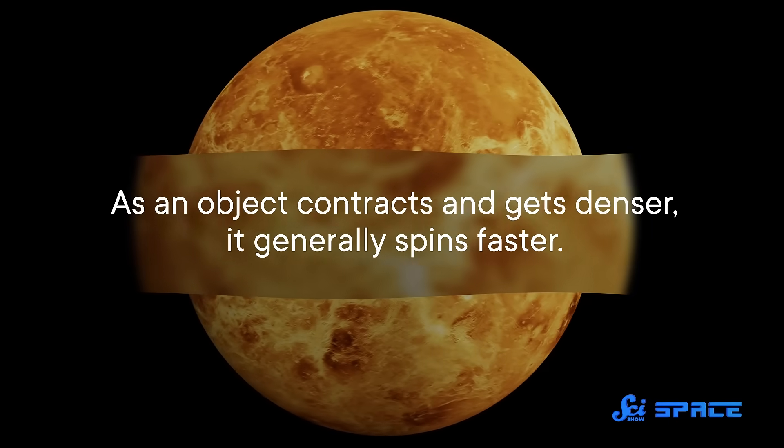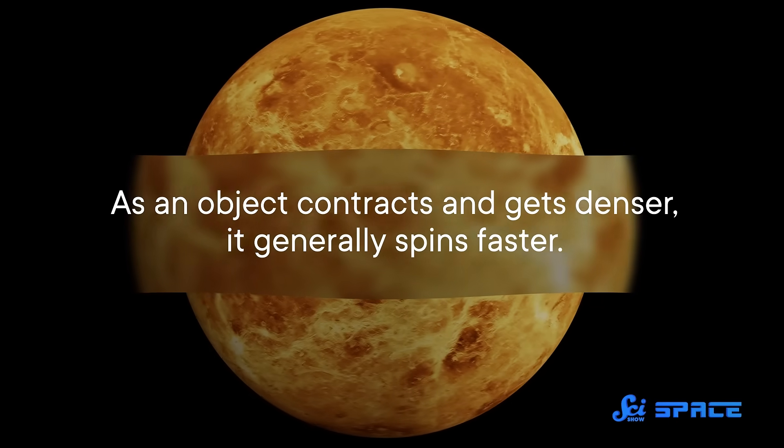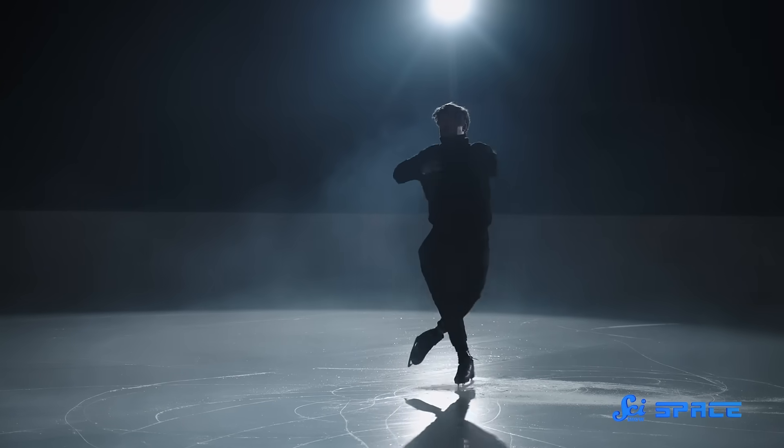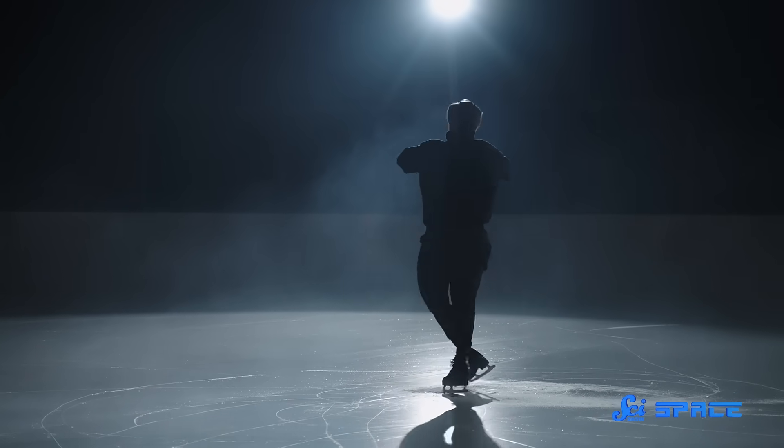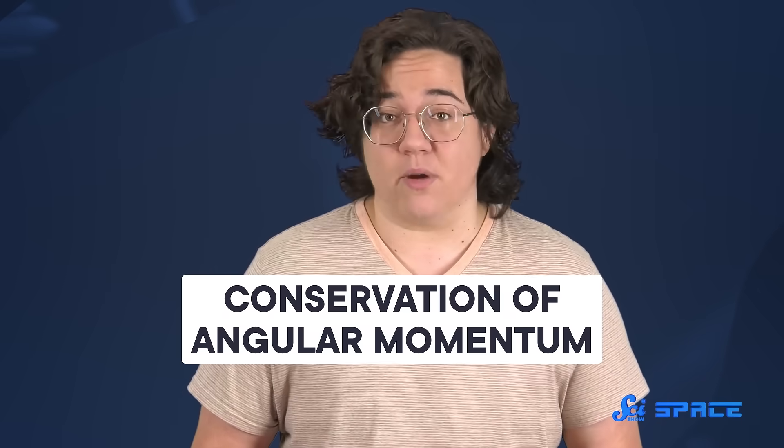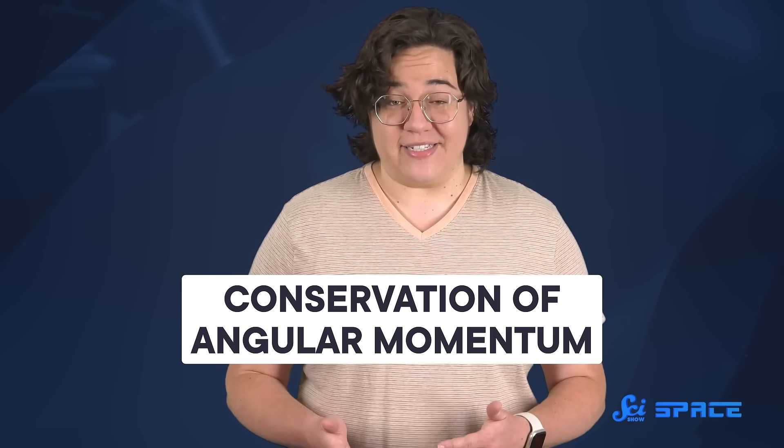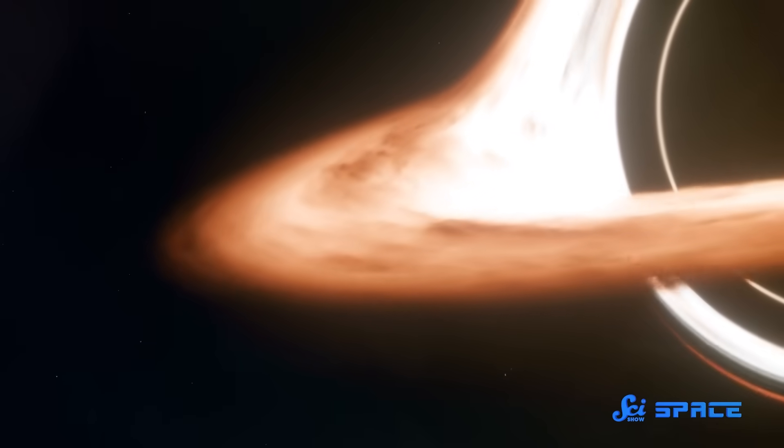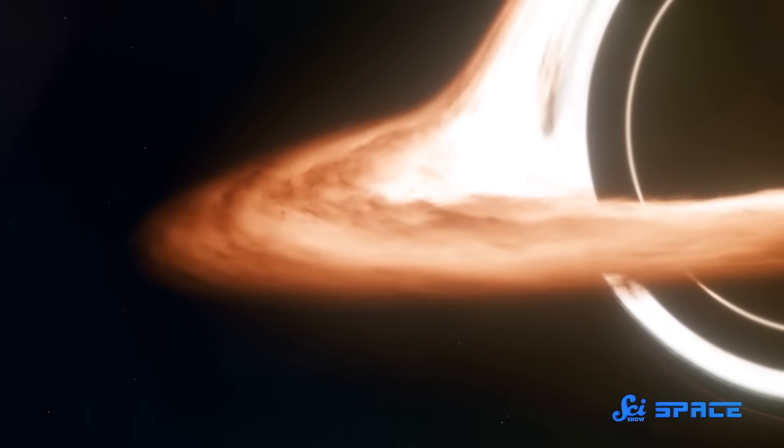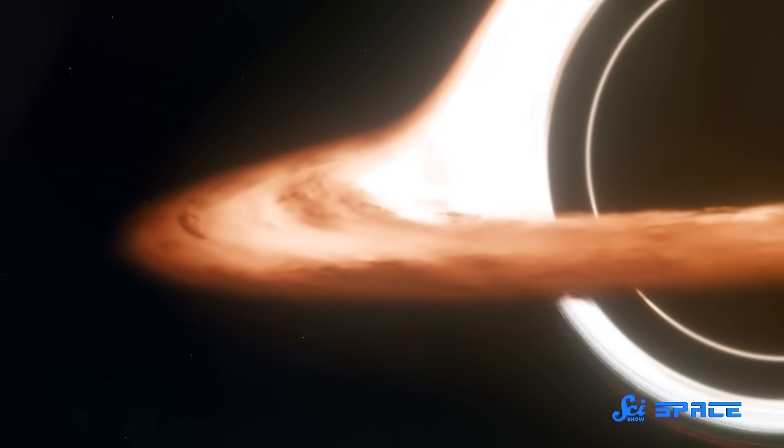And as an object contracts and gets denser, it generally spins faster. Just like how a figure skater who tucks in their arms and legs will start spinning so fast they become a blur. It's an example of a law of physics called the conservation of angular momentum. And nothing in the universe is exempt. So you'd think that black holes, with their infinite density, would rotate so fast that their spin approaches infinity too.